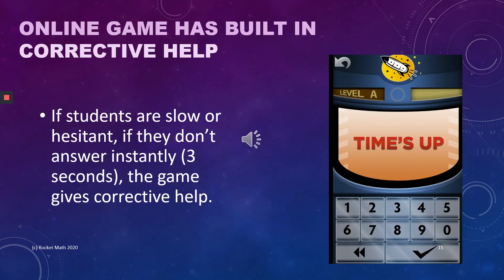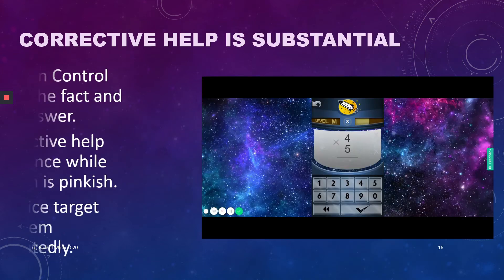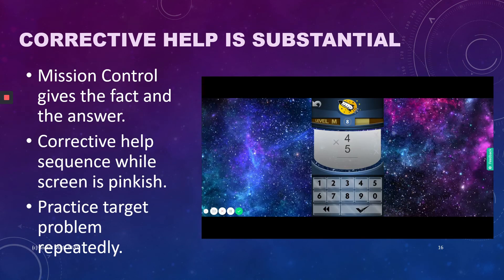A major strength of the online game is the corrective help built into the game. Any time a student doesn't answer within the three-second time limit, the game stops to give them corrective help. Students cannot help but learn their facts by playing this game because the corrective help given by the game is substantial and effective. Watch the corrective help procedure here for the four times four fact shown by the pinkish screens.